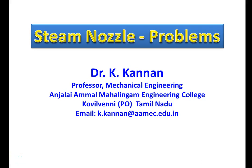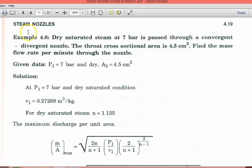Dear students, this is again steam nozzle problem part 3. Example 4.8: Dry saturated steam at 7 bar is passed through a convergent-divergent nozzle. The throat cross-sectional area is 4.5 cm².